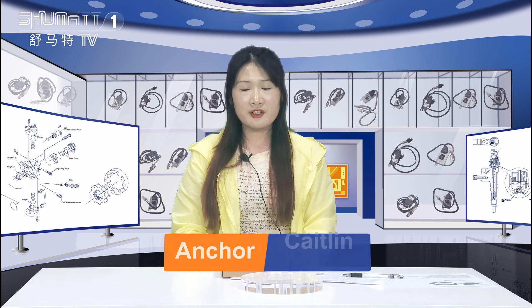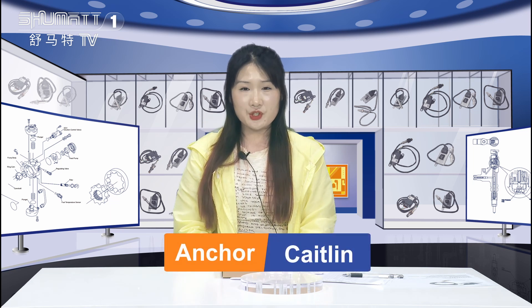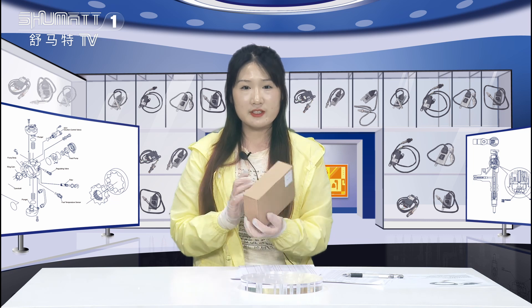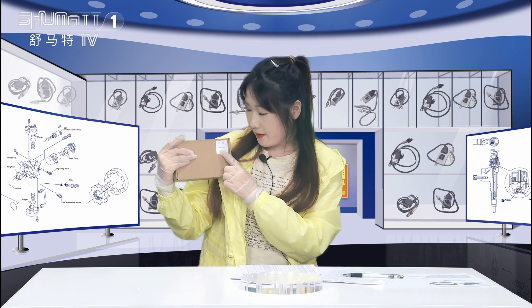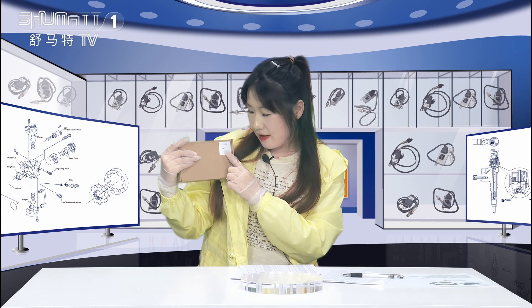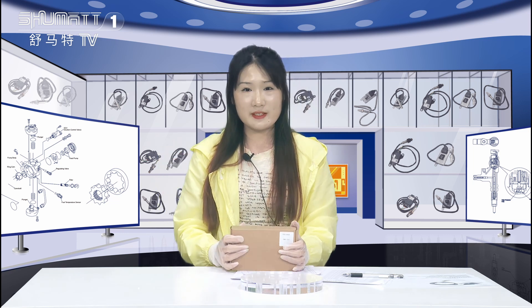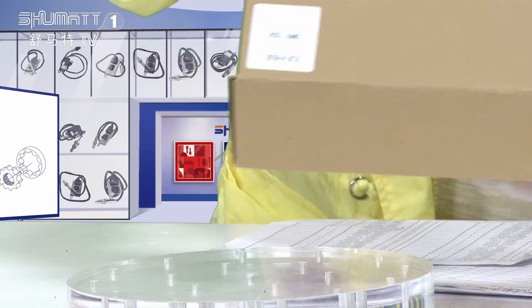Hi everyone, welcome! It's Caitlin from Shenzhen Shuma. Today we're showing the natural oxygen sensor. First, the outside packaging - the brown box here. This is our label with the product code 5WK9-7304. We support customized service.